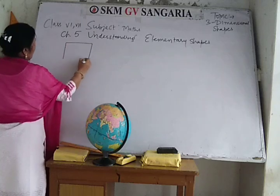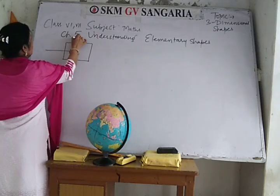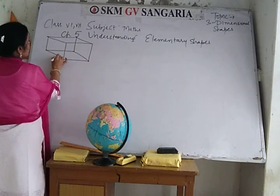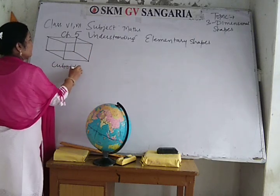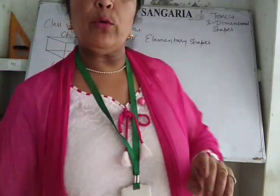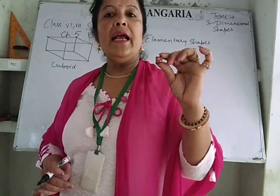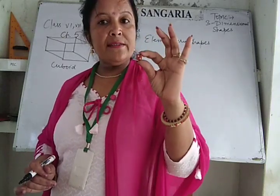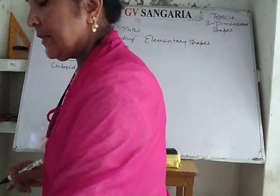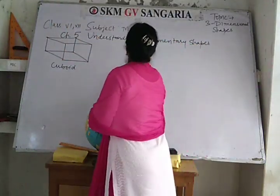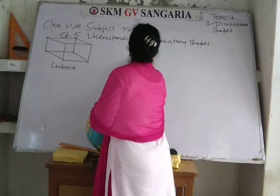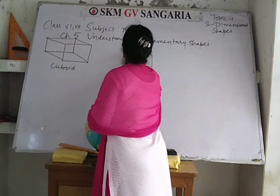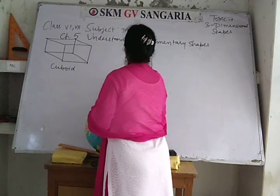Here I have shown you objects. This is the shape of a cuboid — this is called a cuboid. When you talk about this Ludo dice, it has length, breadth, and height equal. That's why it is called a cube — because all sides are of equal length.